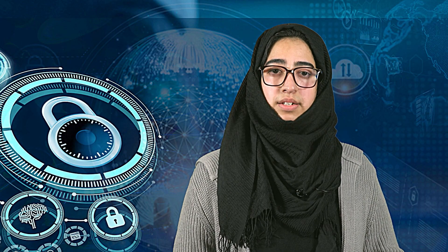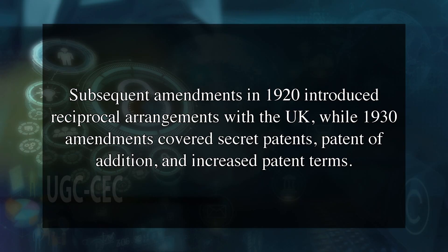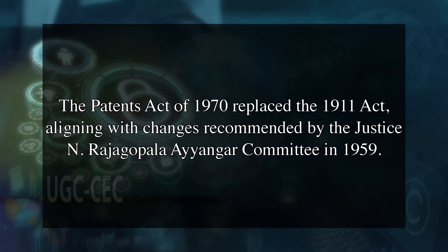The Indian Patents and Designs Act of 1911 replaced prior laws, marking the first instance of patent administration under the Controller of Patents. Subsequent amendments in 1920 introduced reciprocal arrangements with the UK, while 1930 amendments covered secret patents, patent of addition and increased patent terms. In 1950, Act XXX amendments addressed working of inventions and compulsory licenses. The Patents Act of 1970 replaced the 1911 Act, aligning with changes recommended by Justice N. Rajgopala Iyengar Committee in 1959.